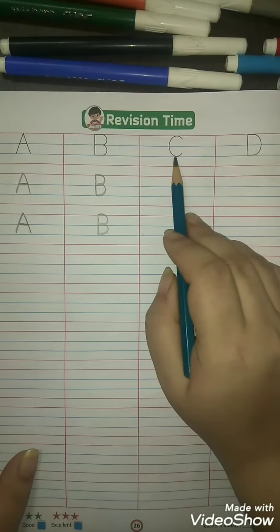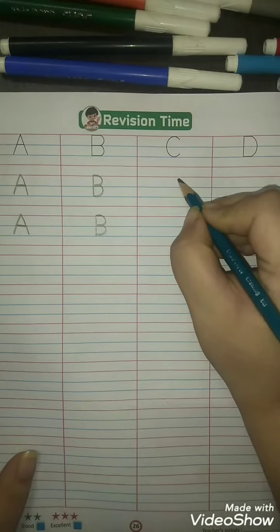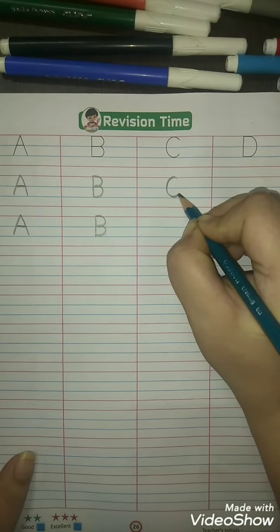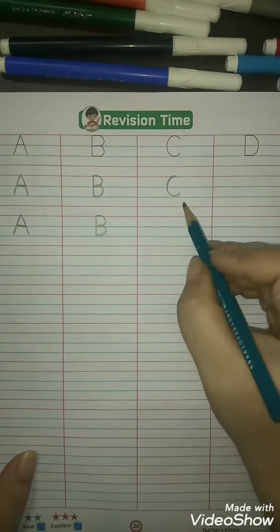Now C, C for cat. Make a curve like this. C for cat, make a curve like this. C for cat.